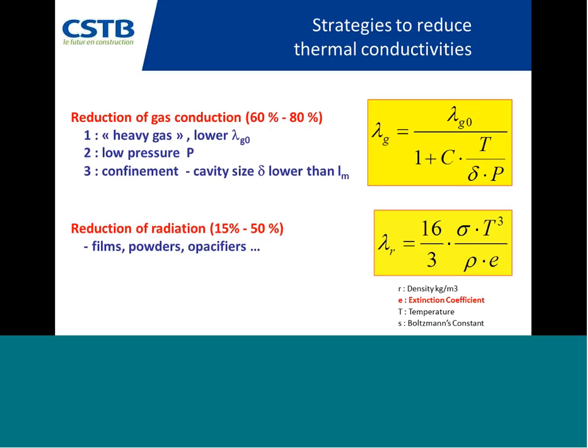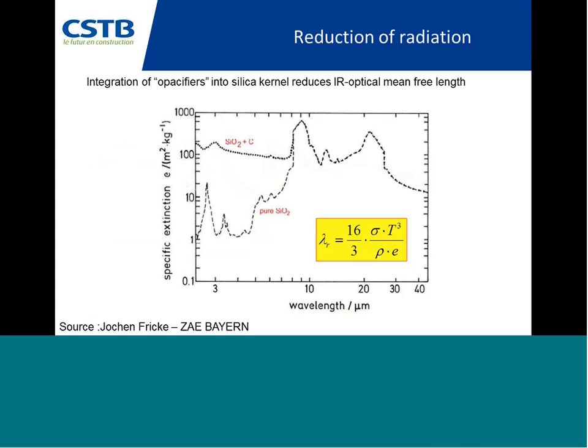You can also reduce the conductivity by reducing radiation through the structure. For porous material at low density, you have only one option: to increase what we call the extinction coefficient by adding a film, powder, or some opacifier. For example, in a fumed silica porous material, if you add some carbon black, the specific extinction coefficient will increase because the carbon black acts as a barrier to radiation. This is work done at ZAE Bayern in Germany.